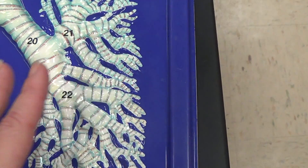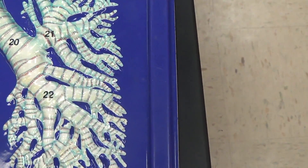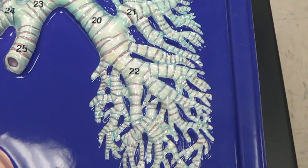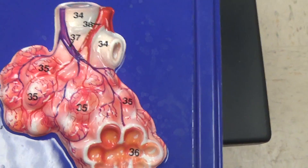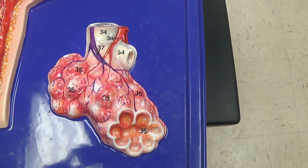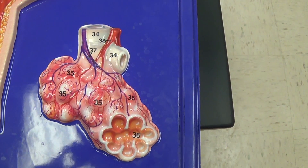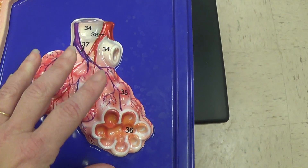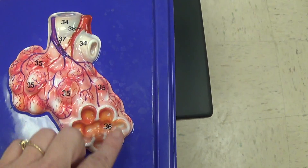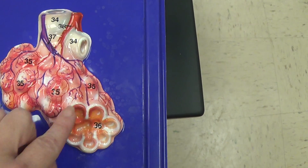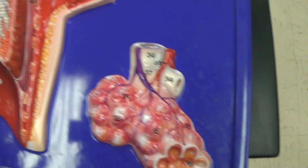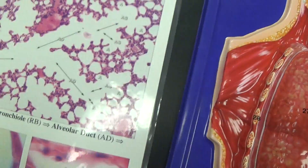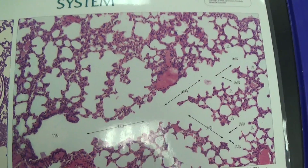And then we can see much more branching and branching and branching. Eventually we get down to a level of branching more like this. We're going to start out by looking at this from a histological perspective.